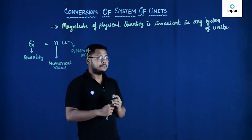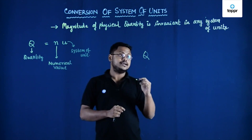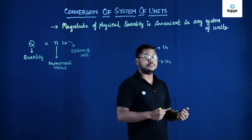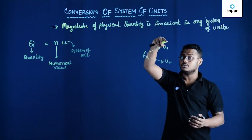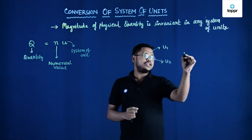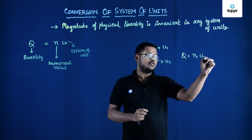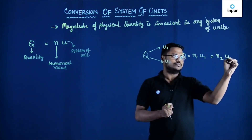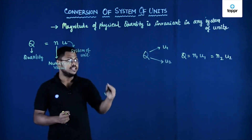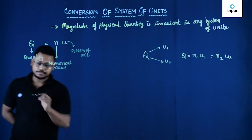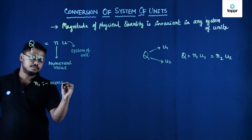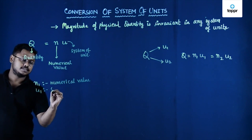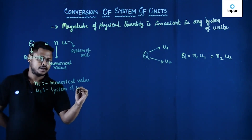Now let us say we have a quantity Q which can be expressed in system of unit U1 and another system U2. We want to find the value of that quantity given in U1 in terms of U2. So we can write Q equals N1 times U1, which must equal N2 times U2, where N1 is the numerical value in U1 and N2 is the numerical value in U2.